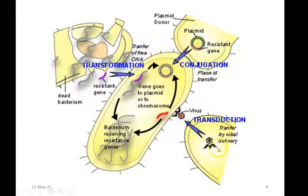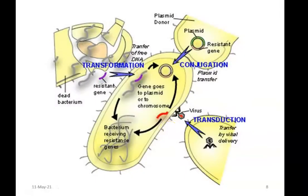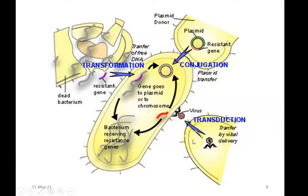The next one is transduction. A small piece of DNA present in another bacterial host is taken up by a lysogenic bacteriophage. This lysogenic phage then infects a new bacterium, and when infecting, the whole nucleic acid content of that phage is injected into the bacteria. At that time, you can see the foreign DNA — that red-colored DNA which was previously present in the original bacteria — has been transferred with the help of a virus. This process is referred to as transduction.